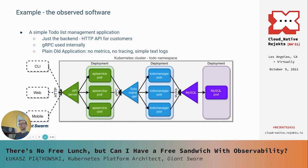Now let me show you our application on display — a simple to-do list management application. We have three services: first is the API server, which is an HTTP frontend that handles authentication and then routes calls via gRPC to a service called to-do manager. The actual business logic is performed by to-do manager; the API service is just a frontend. And then MySQL is the storage backend. The important thing is that this is a plain old application — no custom code to provide metrics, no custom code to provide tracing. It does logs, but they are simple plain text logs — nothing fancy like JSON structured logs.